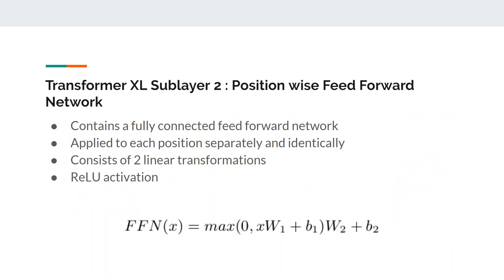This sublayer consists of a fully connected feedforward network and is applied to every output vector from the previous sublayer separately and identically. The weights are identical for every position in a layer but each layer has different weights. Here, a linear transformation is performed twice with recurrent linear unit activation applied after the first transformation.